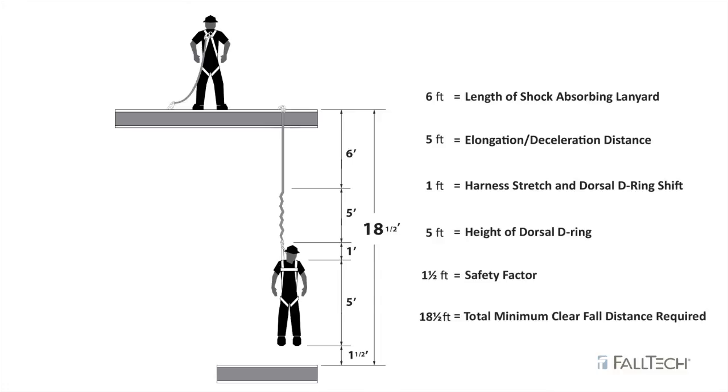In this example, the next lower level would need to be 18 and a half feet below the anchor point in order to safely protect the worker.